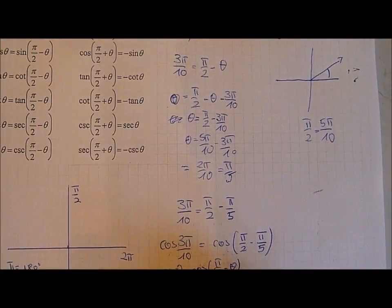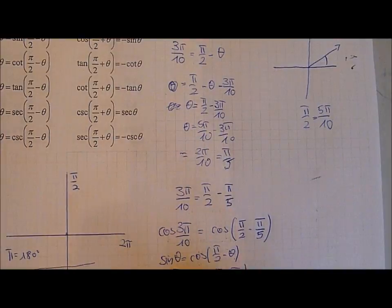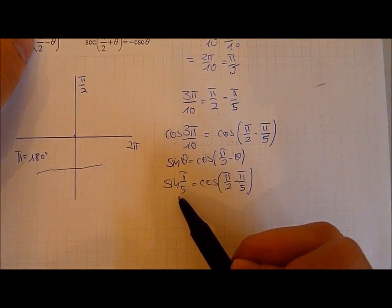And so we have proven that cos 3 pi over 10 is equal to sine pi over 5.